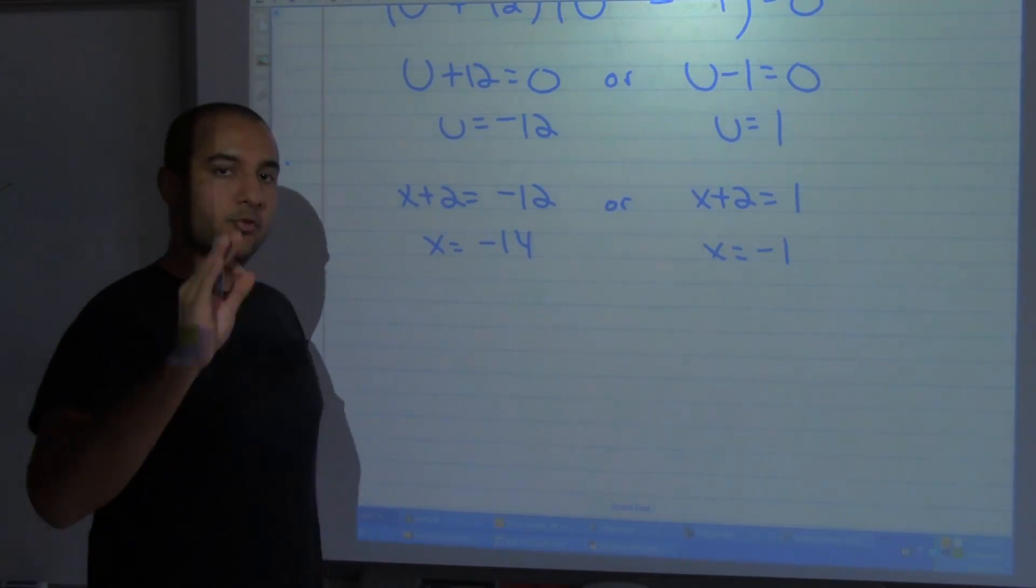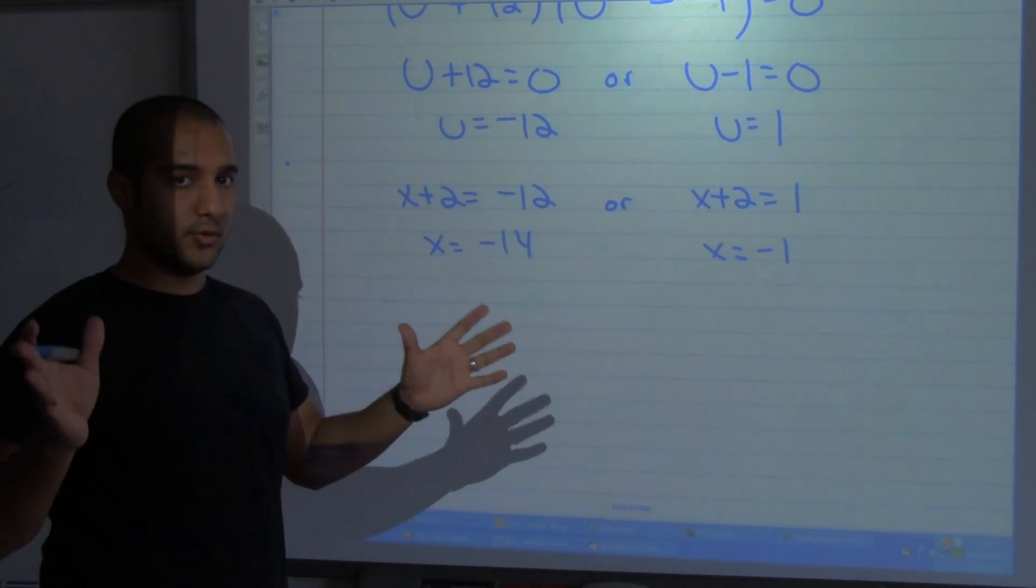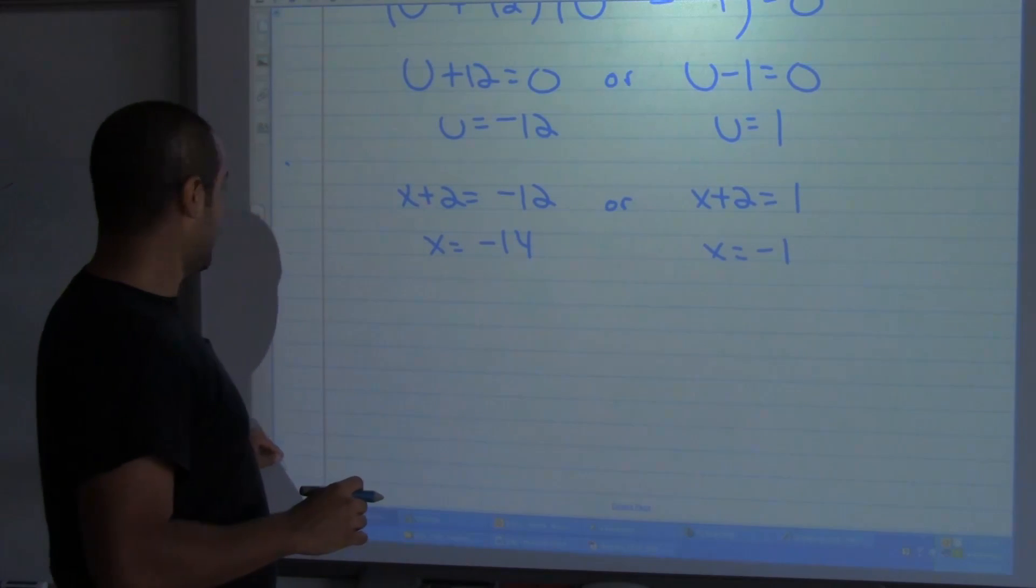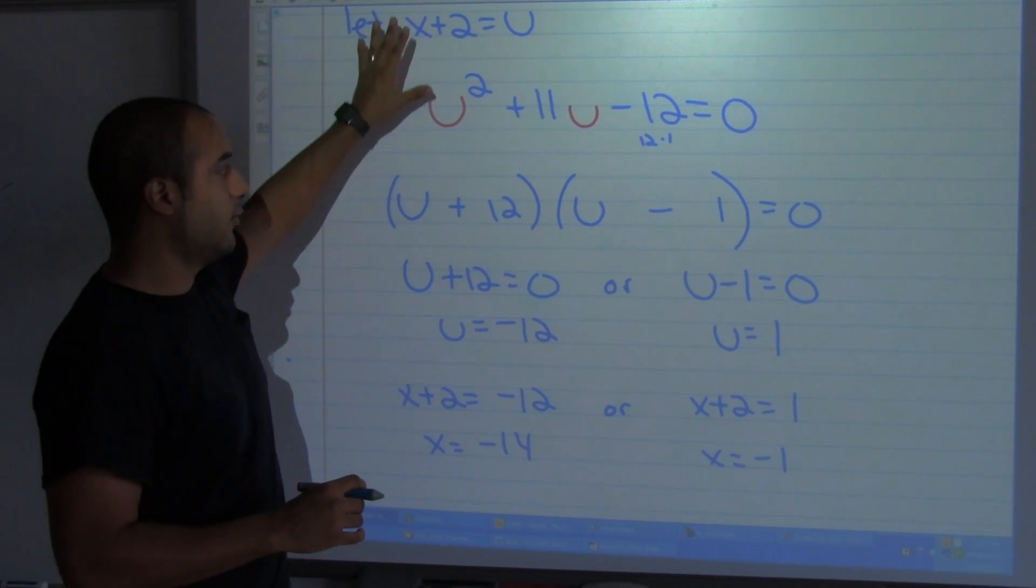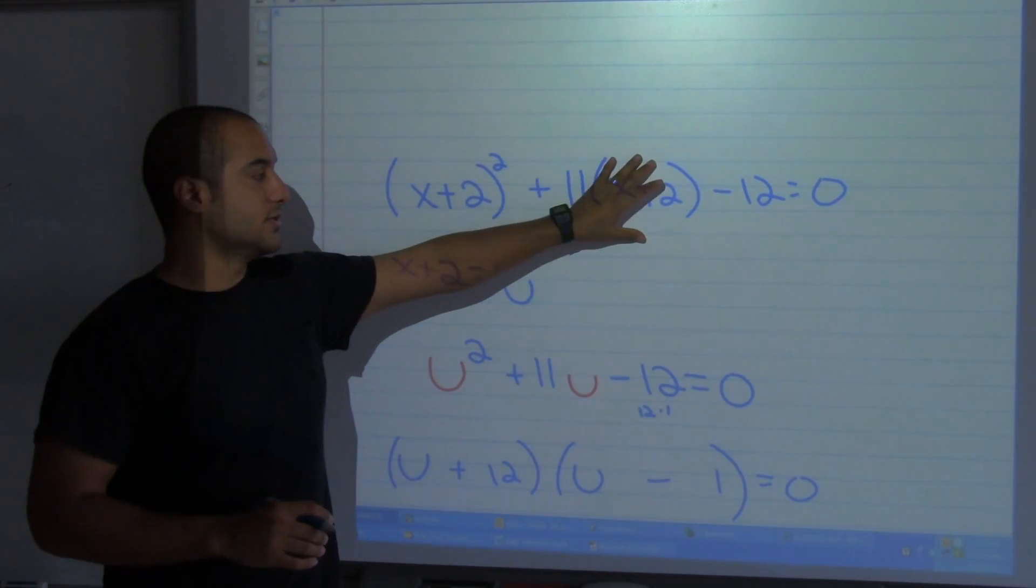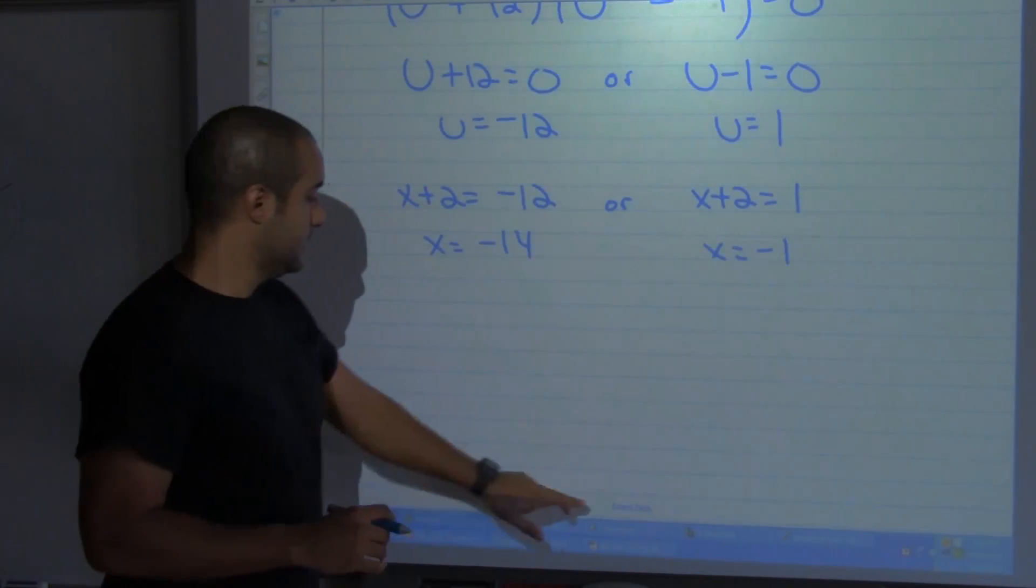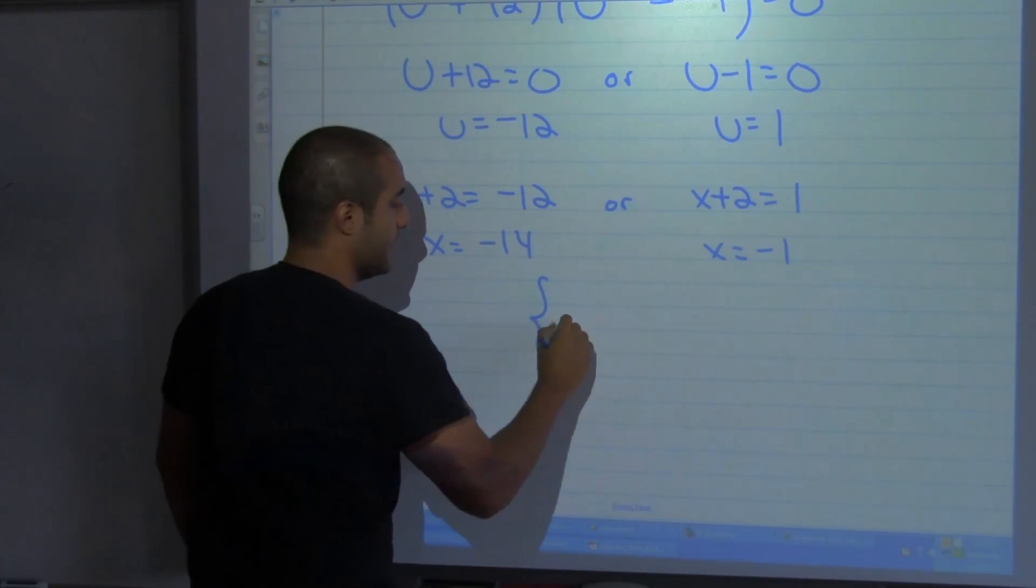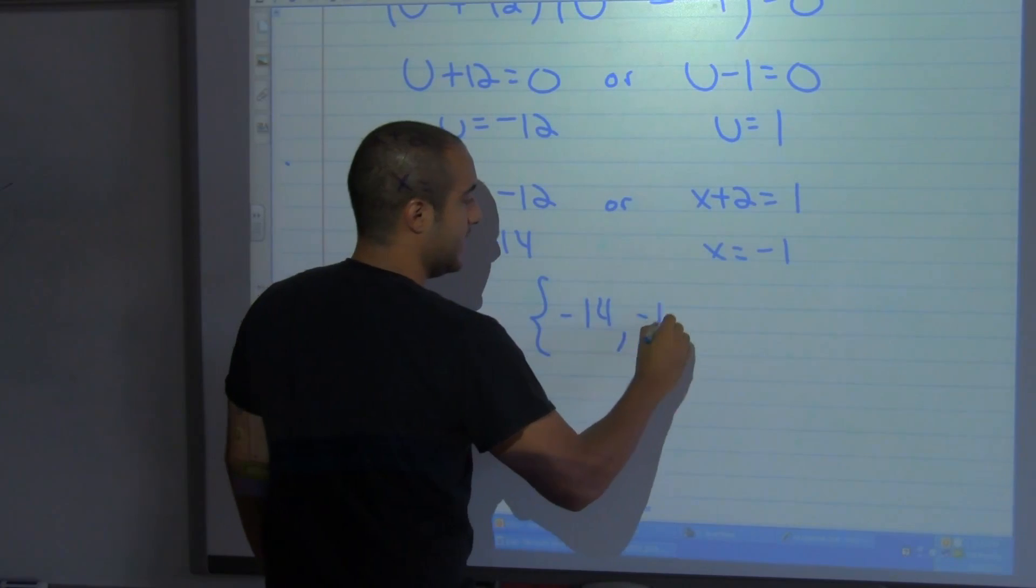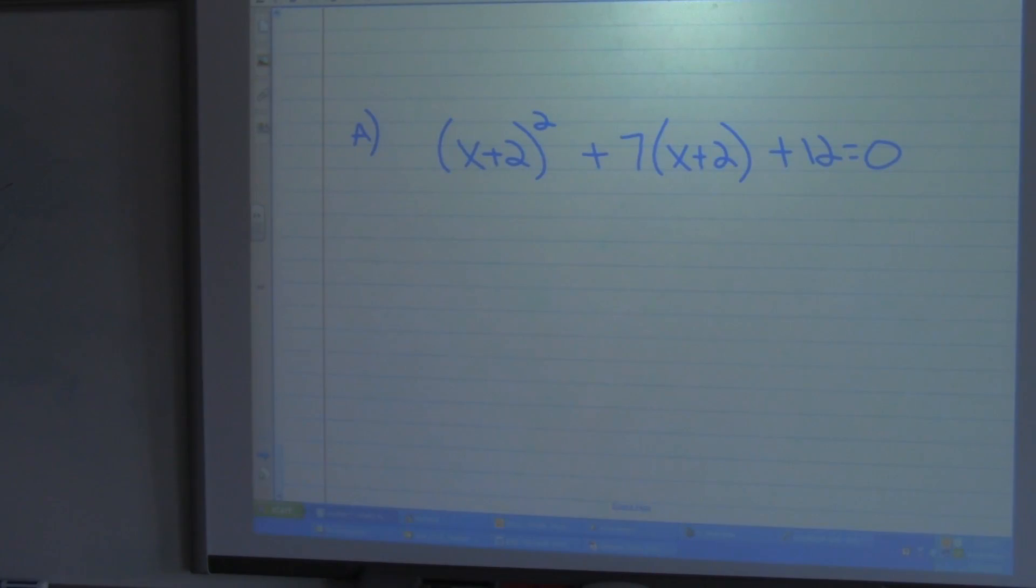Don't forget you always check your solutions. So if you don't mind, I'm going to skip that part, and I know that once I substitute back in here, back into my original equation, I do get 0 for both of these.